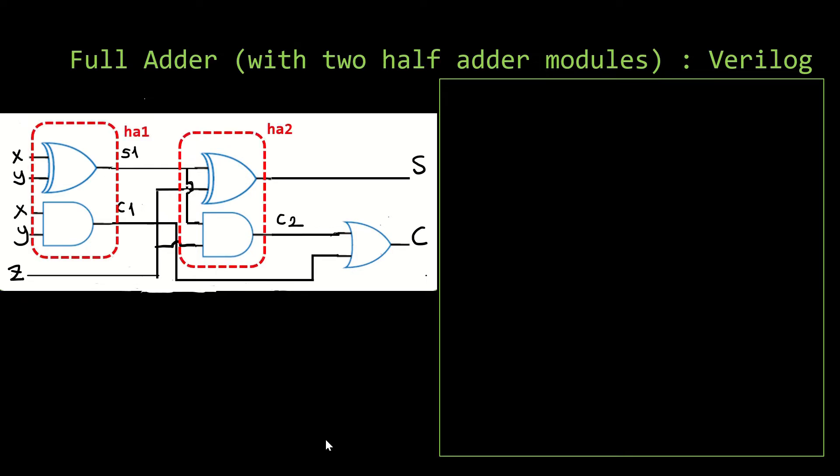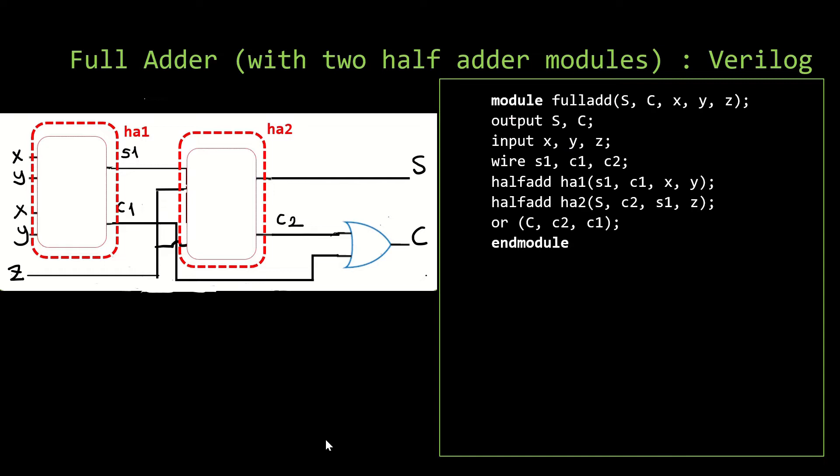Let's assume that we don't know what are inside these HA1 and HA2 boxes. With this view, we can write our full-adder code as the following.